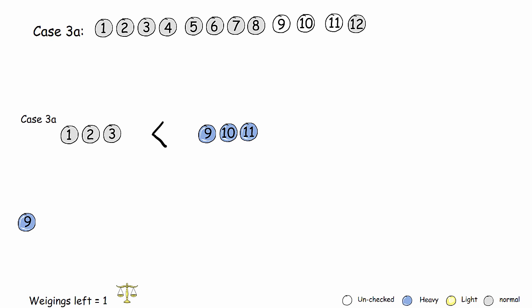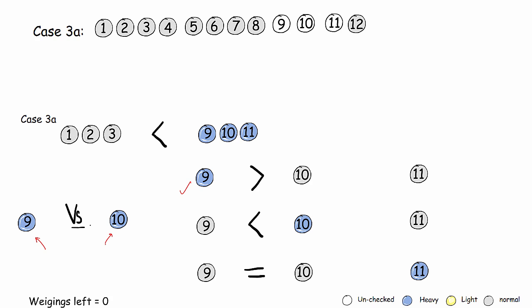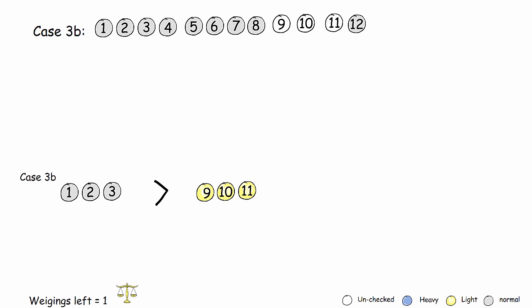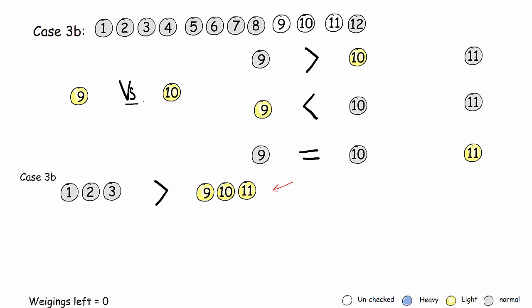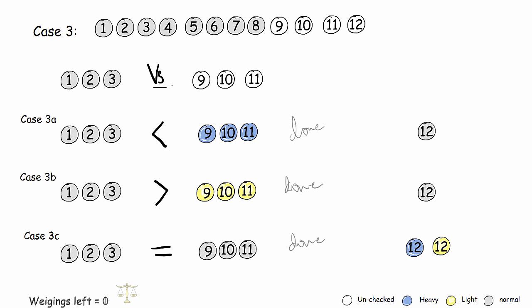If one of balls 9, 10, or 11 is faulty and can only be heavy, we weigh two of them against each other. Whichever side the scale shifts to is the side with the faulty ball, and if the scale balances, ball 11 is the heavy one. The next case is identical: if one of them can only be light, we weigh two against each other. Whichever side the scale shifts away from is the side with the faulty ball, and if the scale balances, ball 11 is light. With this, we are done with all three scenarios for Case 3.